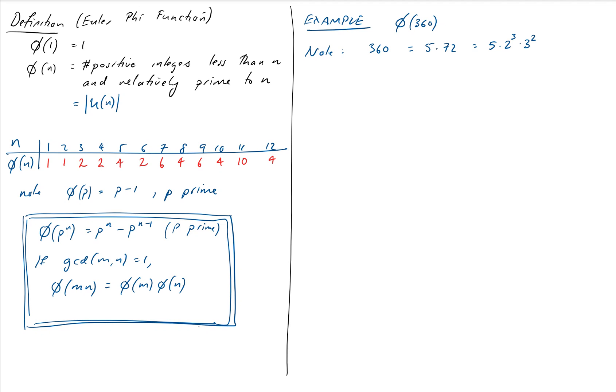So that means that phi of 360, notice that all of the prime powers, these three prime powers, this one, this one, this one, they're all relatively prime to each other. So I can just do those separately: phi of 5, phi of 2 cubed, phi of 3 squared. And we know that phi of 5 is 4. We could also use this formula if we wanted, which would give us 5 minus 1 is 4.